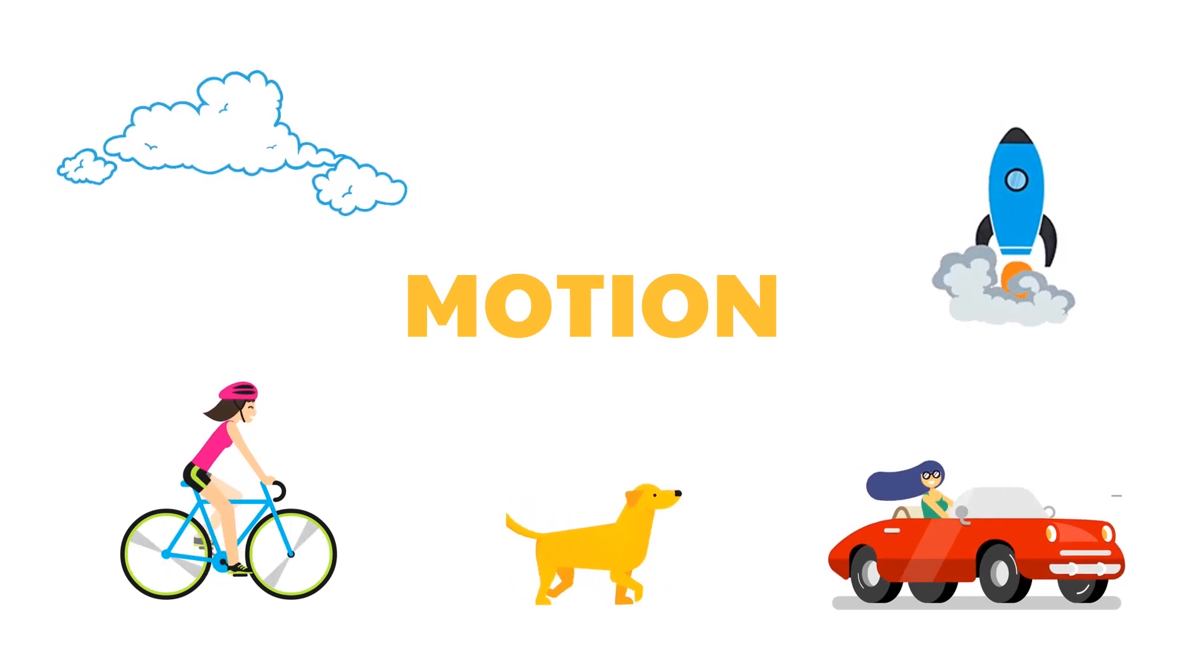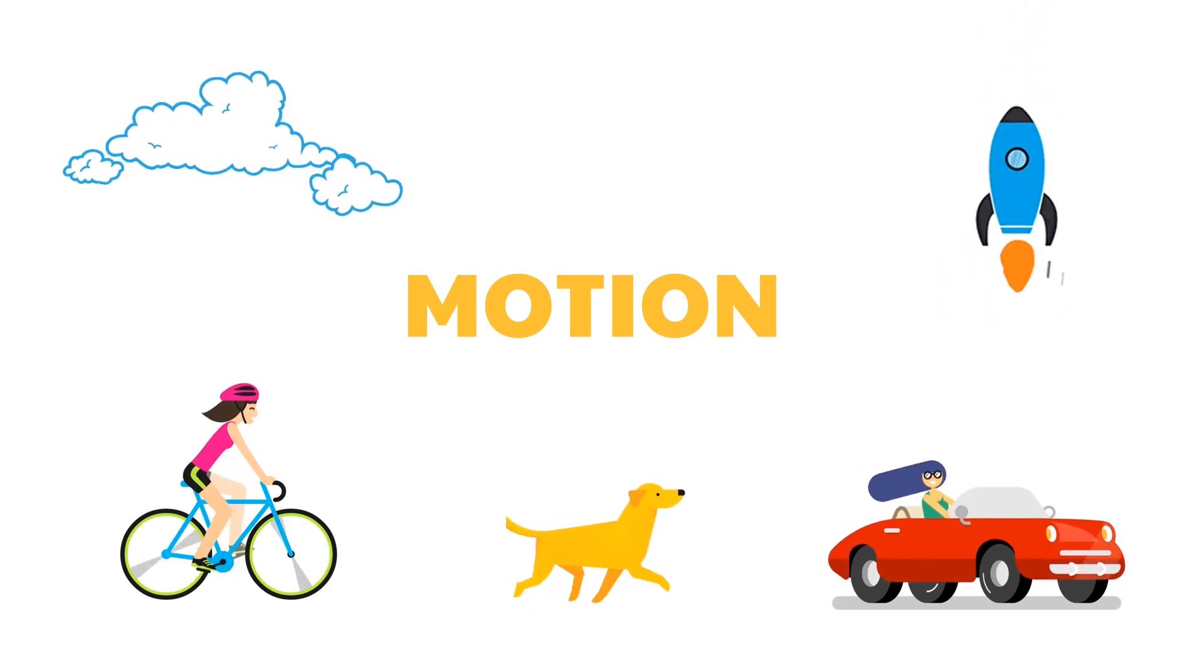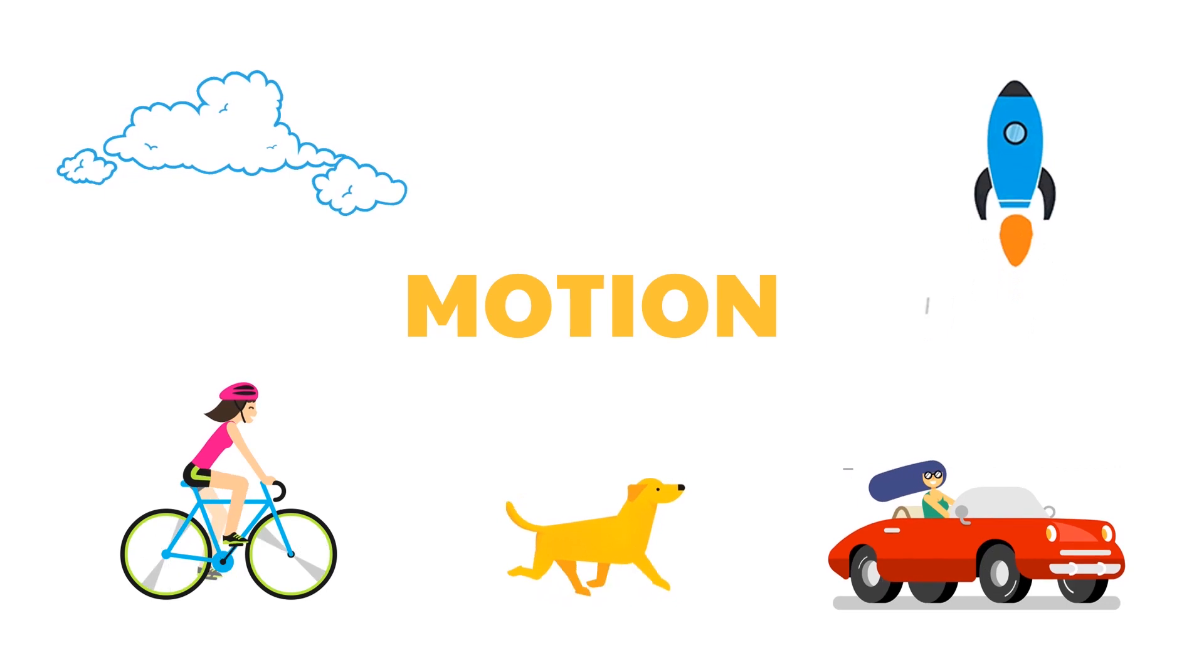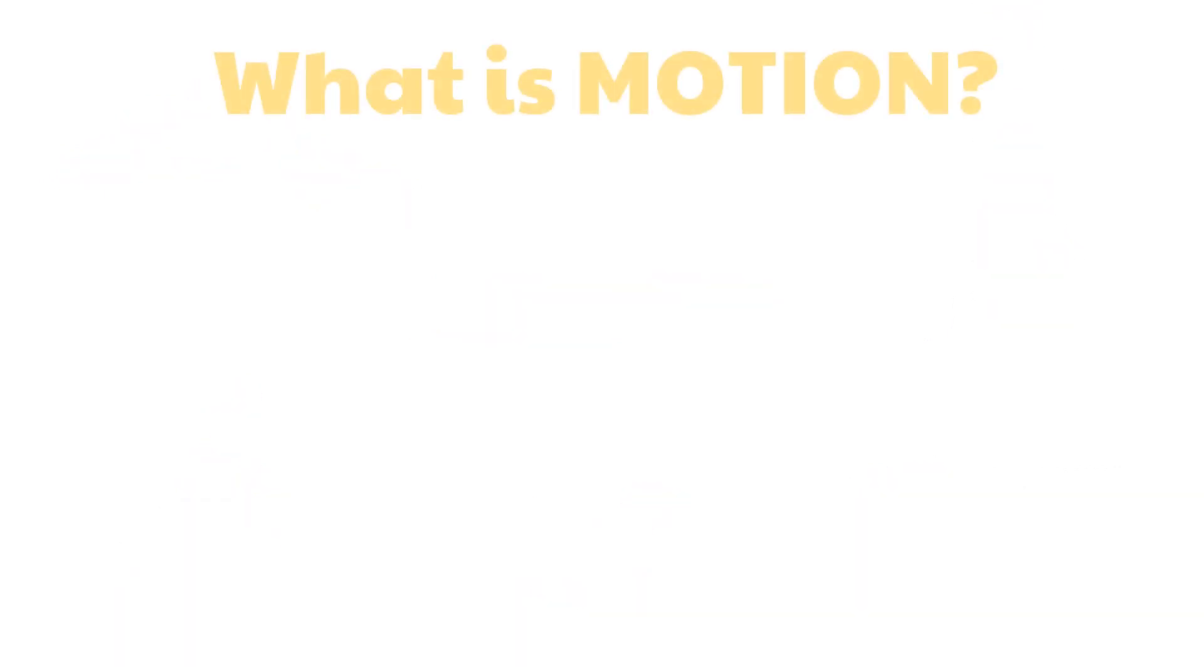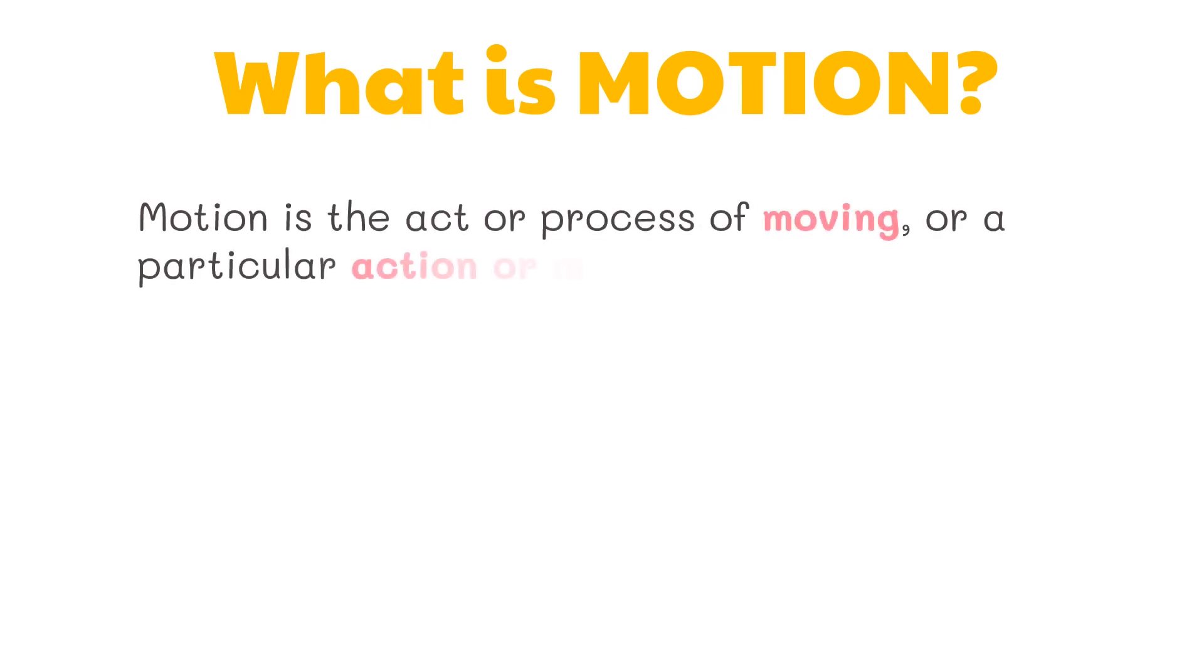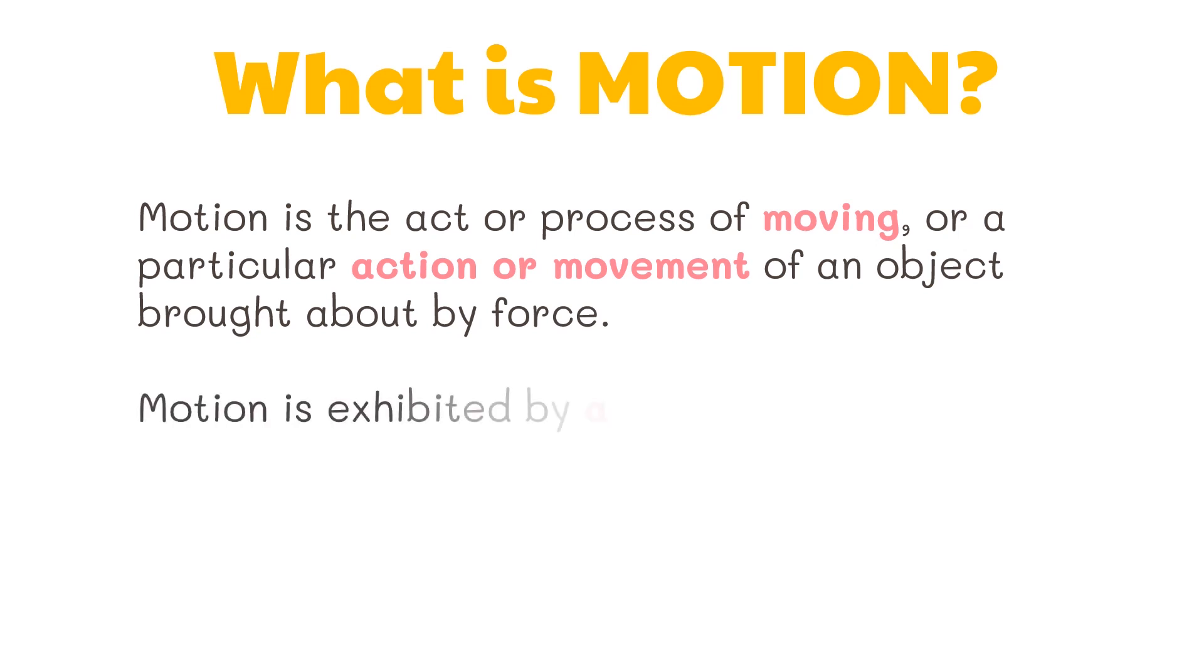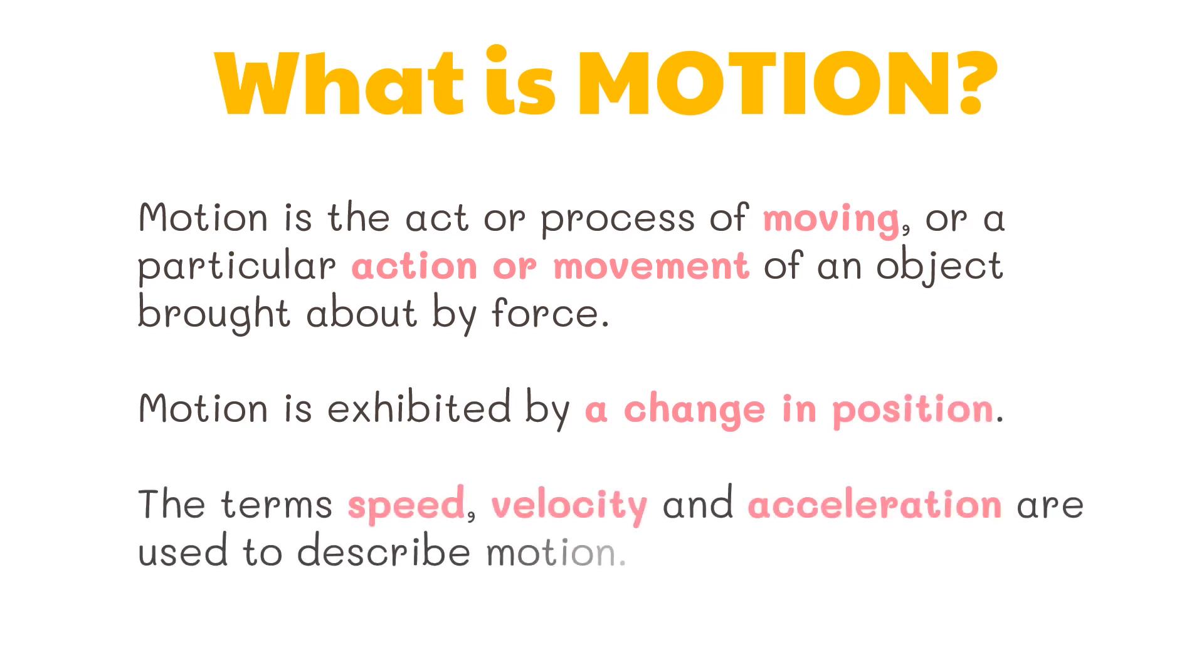Because motion is so common it seems to be very simple, but in science describing motion actually entails careful use of some definitions. So what is motion? Motion is the act or process of moving or a particular action or movement of an object brought about by force. Motion is exhibited by a change in position. The terms speed, velocity, and acceleration are used to describe motion.